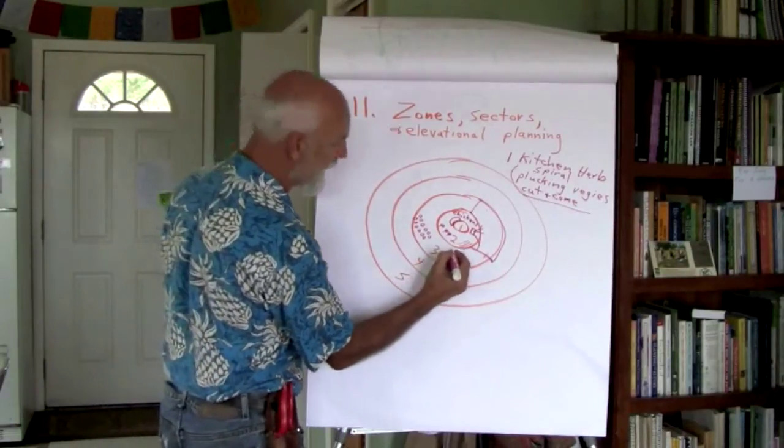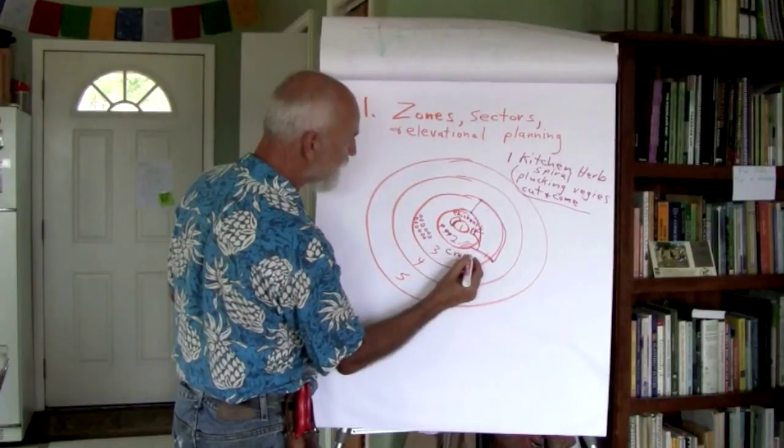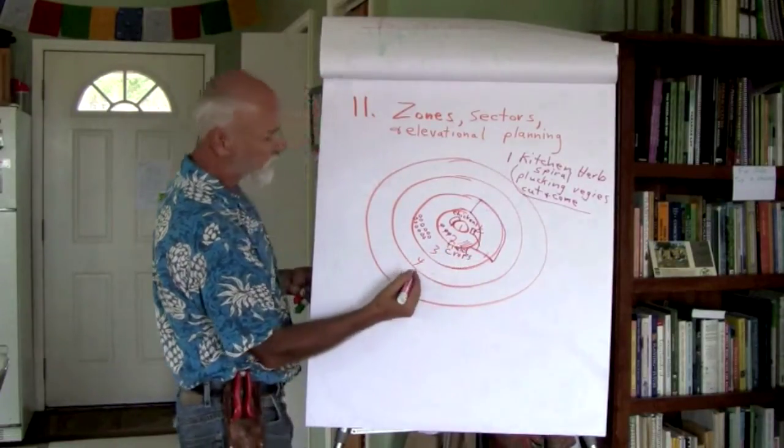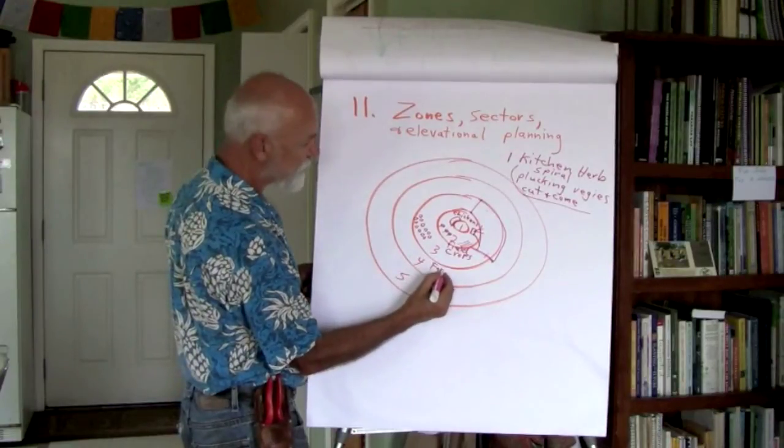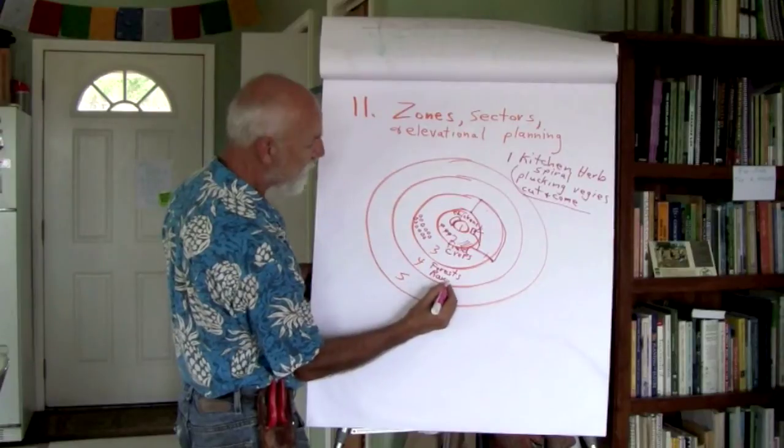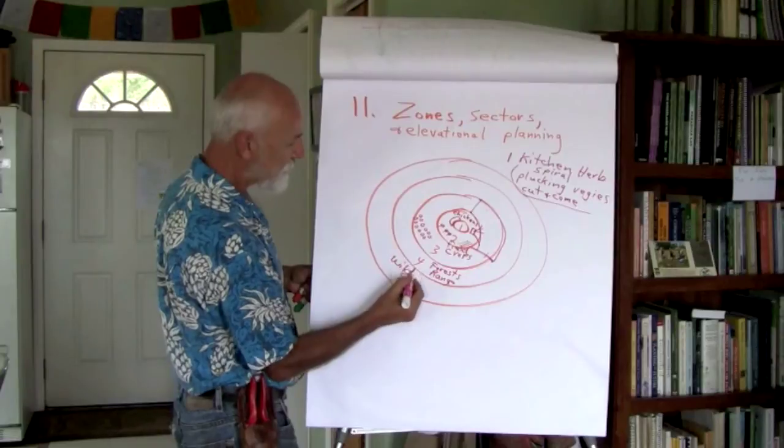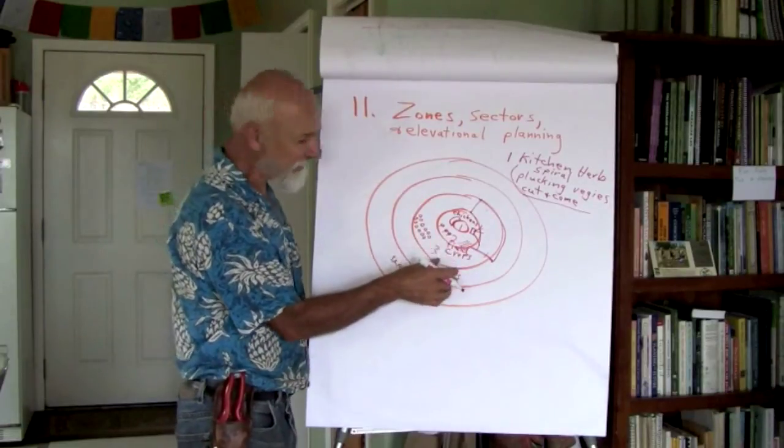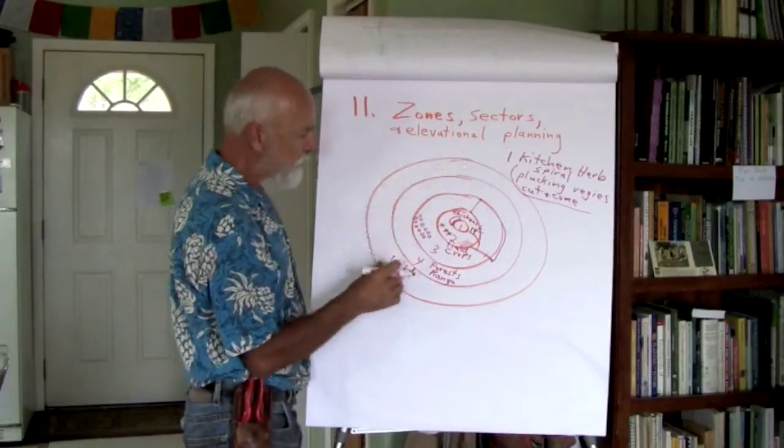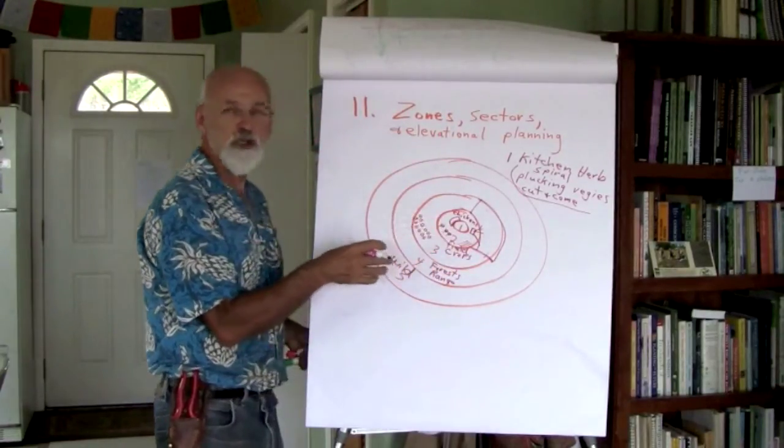Your field crops and grains, usually in zone three. Zone four is your forest and range. You don't go there that often. And zone five is the wild, the wilderness, et cetera. Now, of course, every homestead doesn't have all these capabilities. This is more like the rural kind of situation. But this can be applied even in your yard.